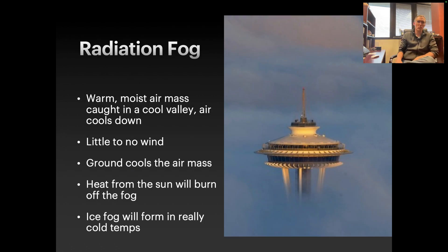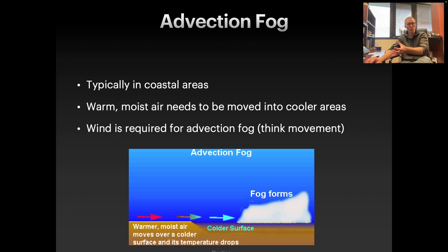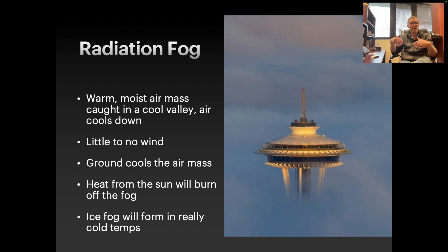Radiation fog is when warm, moist air gets caught in a cool valley and the air cools down. This is when you have a warm air mass, the sun goes down, the air mass cools, and that results in fog. In this case, we have little to no wind — as opposed to advection fog where we needed wind. The air mass is radiating heat. Heat from the sun is going to burn off the fog, warming the air up and allowing that moisture to re-vaporize back into the air as humidity. If you have below-freezing temps, you'll get ice fog.